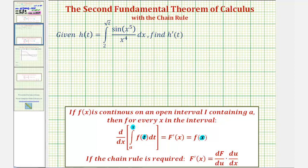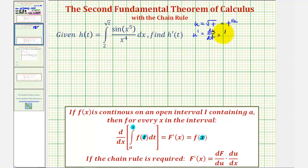So let's begin by letting u equal the square root of t. If u is equal to the square root of t, we could write this as t to the one-half. And therefore, du/dt would be equal to one-half times t to the negative one-half, which would be the same as one divided by two times t to the positive one-half.